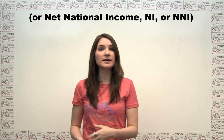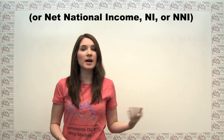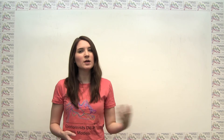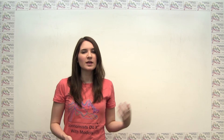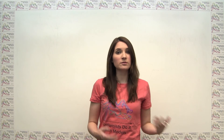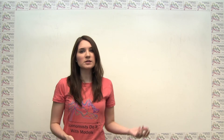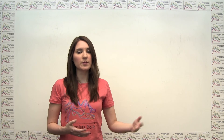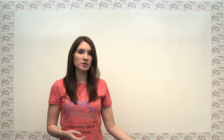National income is equal to net national product after indirect business taxes such as sales taxes are subtracted out and business subsidies are added in. In this way, national income represents the payments to owners of the factors of production. This includes the owners of labor, or workers, as well as the owners of capital such as land, buildings, and money who lend out this capital in return for interest payments. In general, this measure is very similar to net national product.